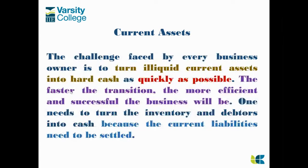When it comes to current assets, we want to turn them into cash as quickly as possible because we want our business to be as liquid as possible. When we looked at ratios — the current ratio is current assets to current liabilities — and the quick test asset ratio was current assets minus trading inventory to current liabilities — both were tests of how liquid the business is.